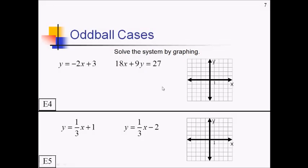We'll end this with a couple of oddball cases. Pause the video and try these out. So for this one we need y equals mx plus b form. Subtract the 18x. Divide by the 9. So we've got y equals negative 2x plus 3.